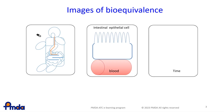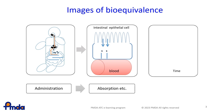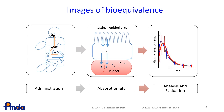In the case of oral dosage forms, administered drugs disintegrate and dissolve in the stomach. Then, the dissolved active pharmaceutical ingredient is absorbed through the intestinal epithelial cells into the blood vessels. In bioequivalence studies, blood samples are collected at regular intervals to measure the concentration of the active pharmaceutical ingredient.